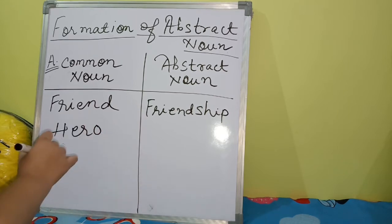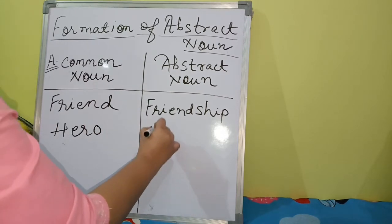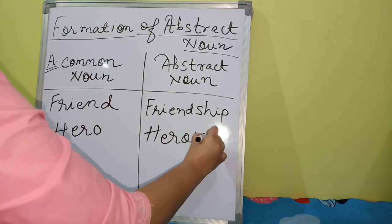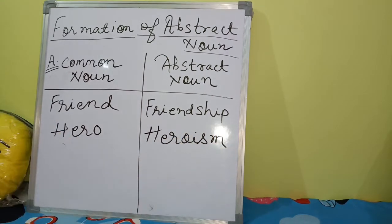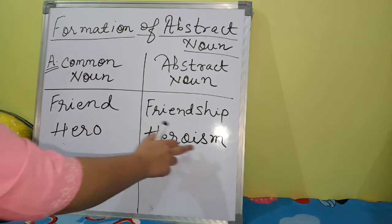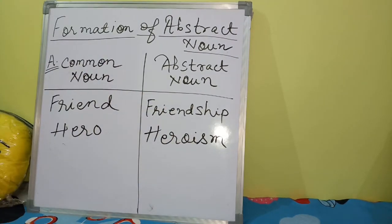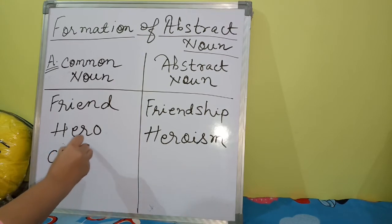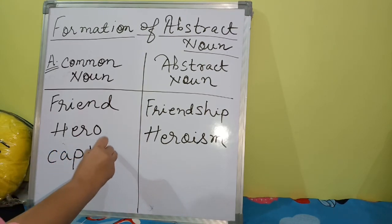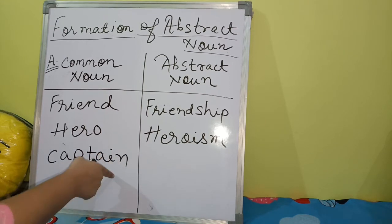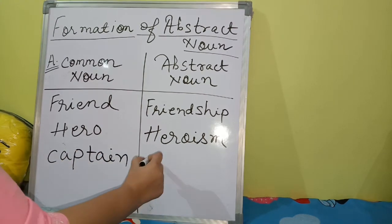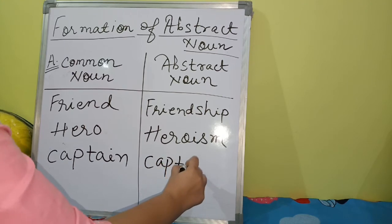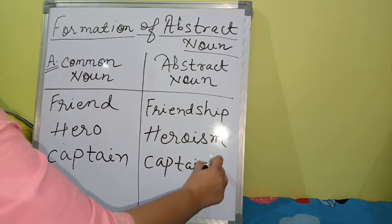Next example: 'hero' is a common noun, and its abstract noun is 'heroism.' Then 'captain' — the abstract noun formed from 'captain' is 'captaincy.'